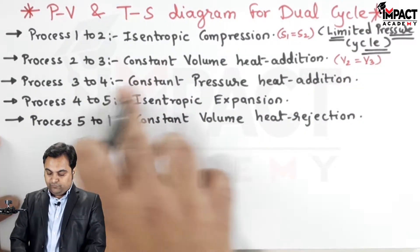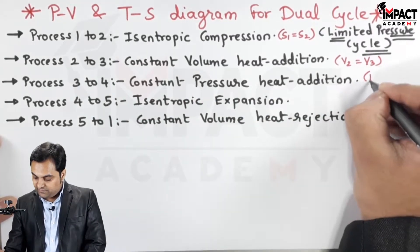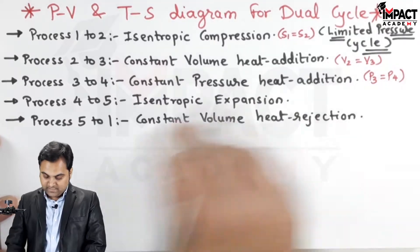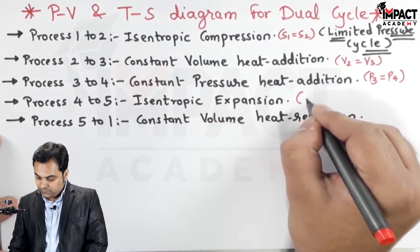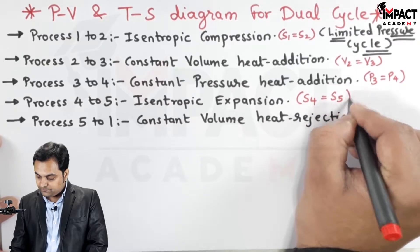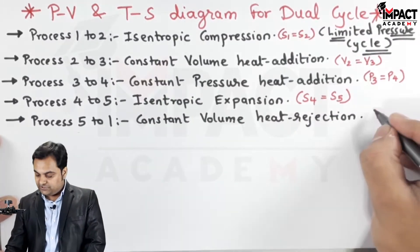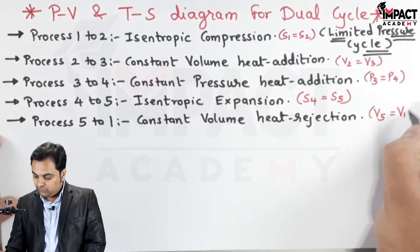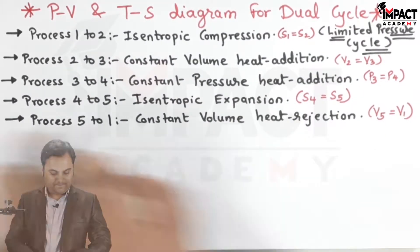Process three to four is constant pressure heat addition, so P3 is equal to P4. Four to five is isentropic expansion, so s4 is equal to s5. Five to one is constant volume heat rejection, so V5 is equal to V1. Now I'll plot the PV and TS diagram.